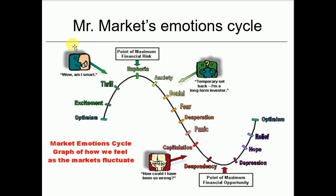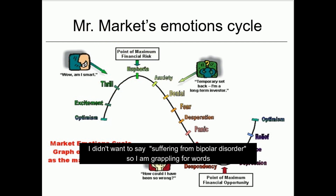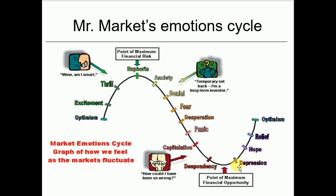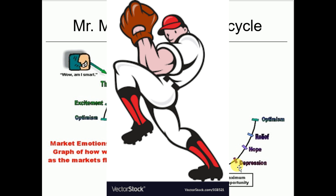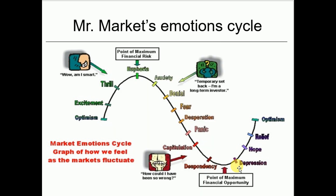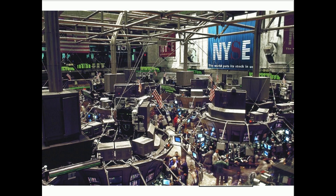Benjamin Graham, who was Warren Buffett's teacher, said that Mr. Market is sick — sometimes euphoric, sometimes depressed. Just watch all his pitches. It's like being at bat and Mr. Market pitches you: when euphoric, Meralco at 500; when depressed and panicky from bad news, Meralco at 200 or 150. So watch out for those emotional cycles of the market.